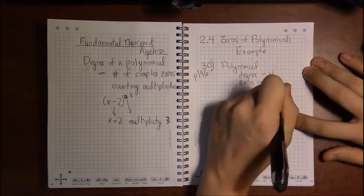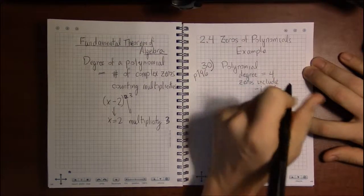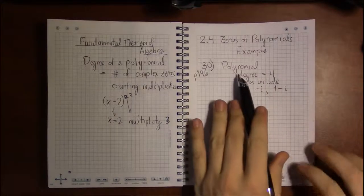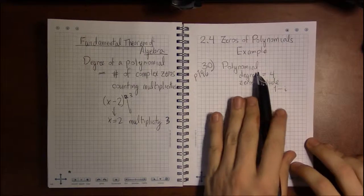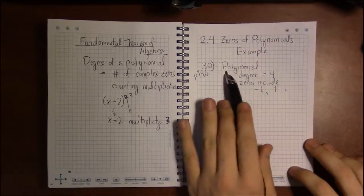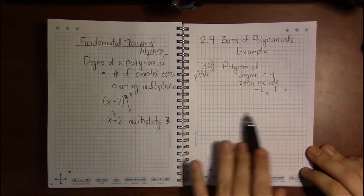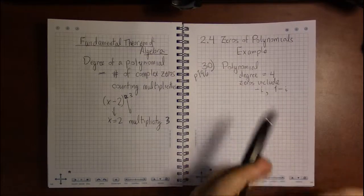In the instructions they tell us this polynomial needs to have real coefficients, which is a fancy way of saying the polynomial in our answer should have no i's in sight when you have it completely multiplied out.